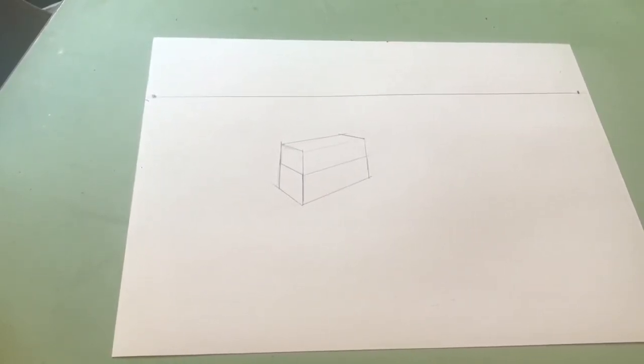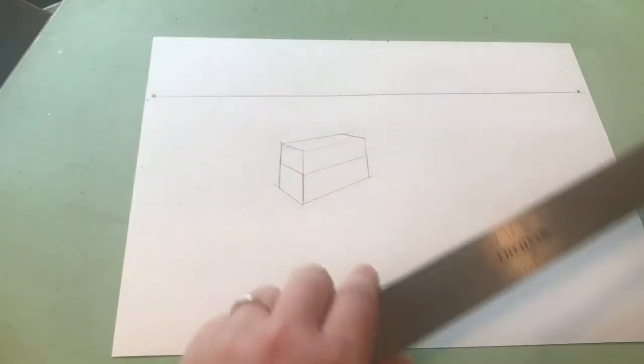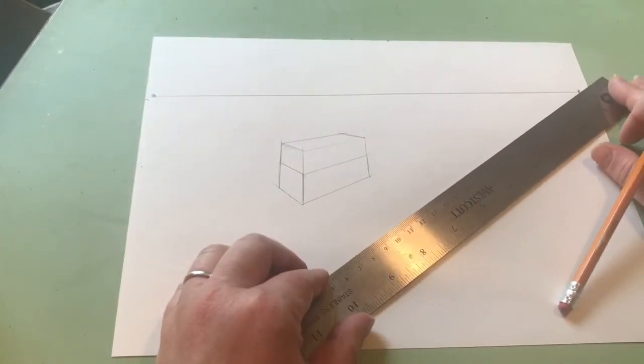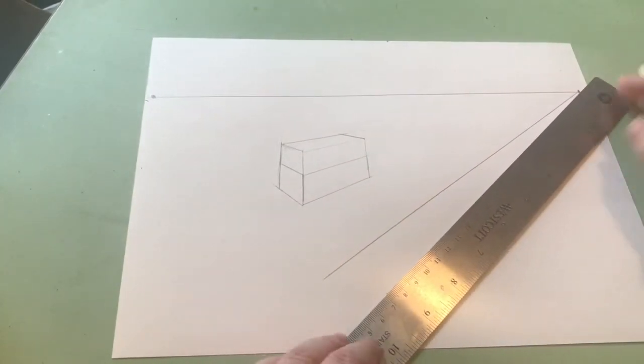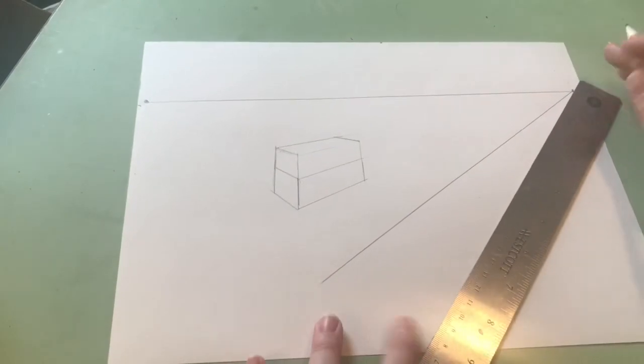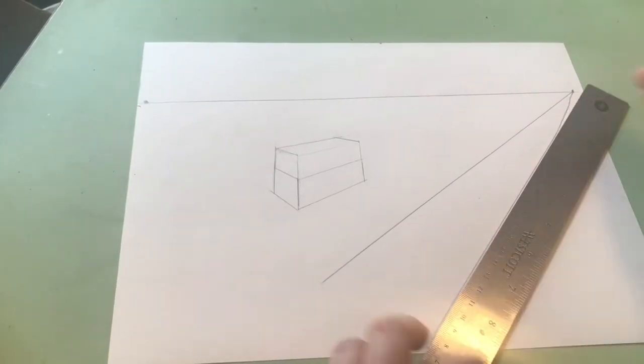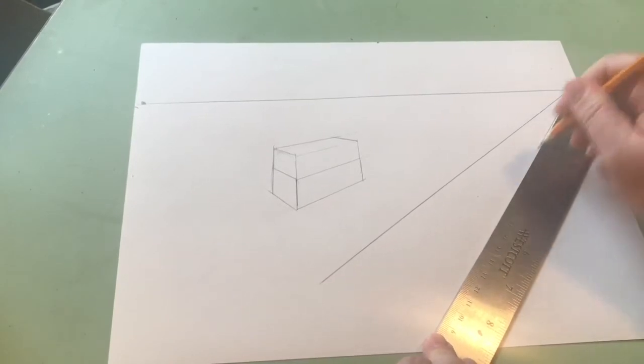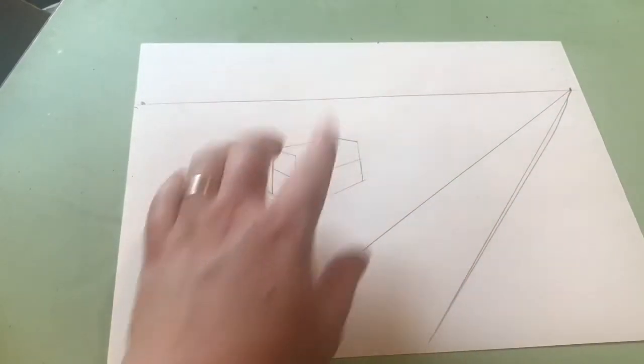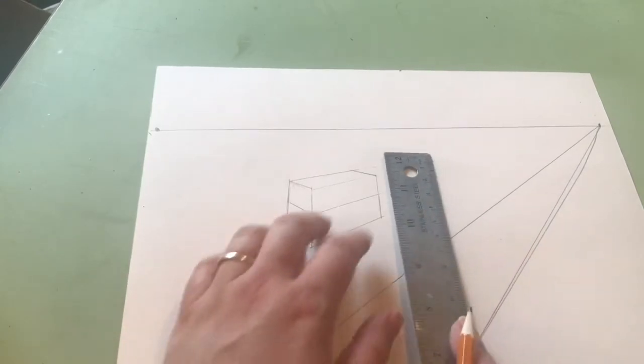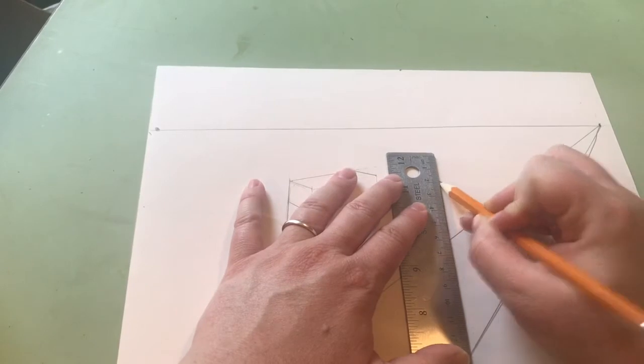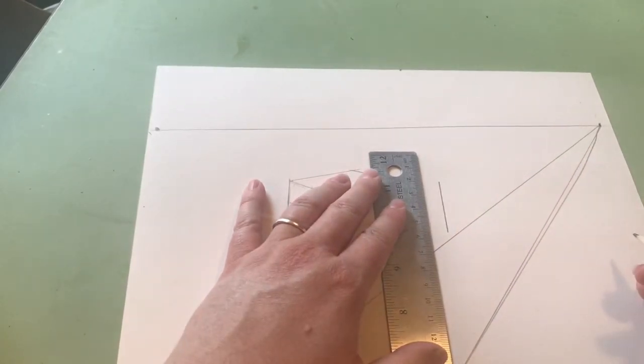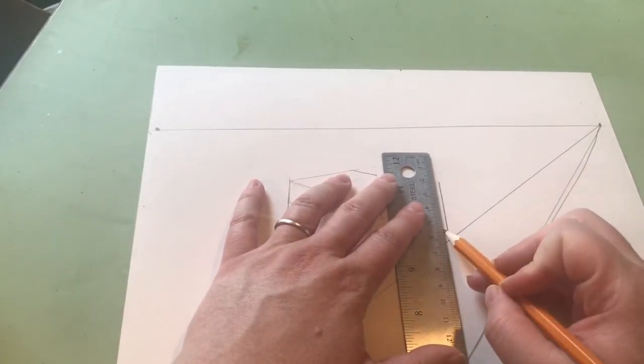We're gonna make some signs. If I have my two vanishing points and say I have a street coming down this way, I want to put a street sign. The first thing I would do is make a vertical line, and maybe I make that a double vertical line because I want it to look three-dimensional.